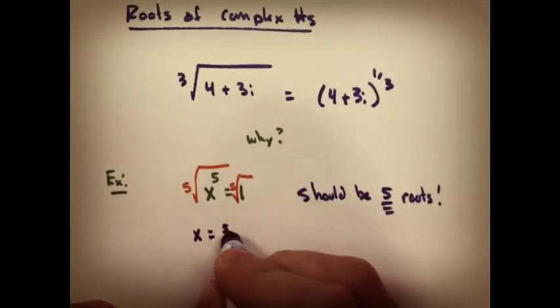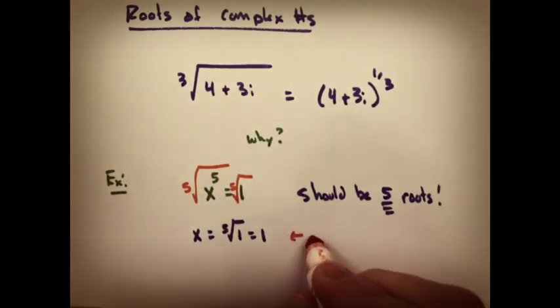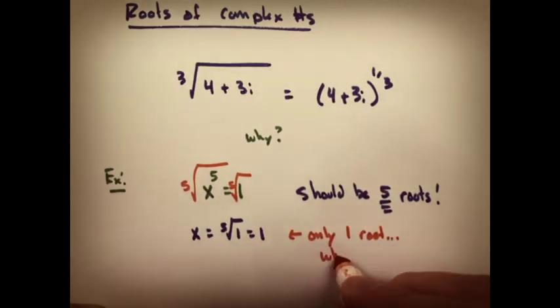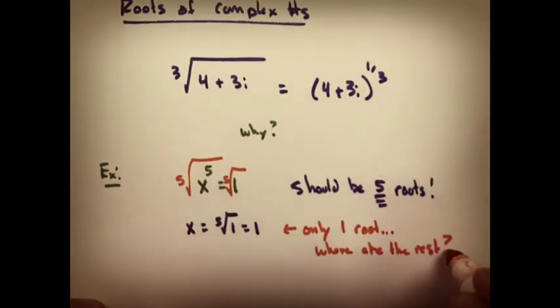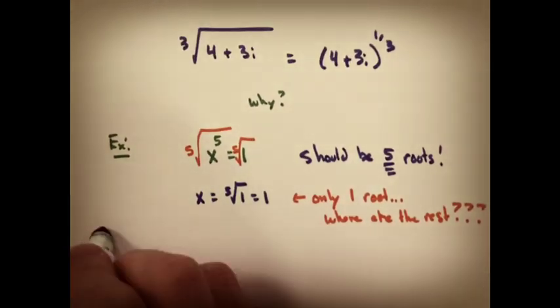If I take the fifth root of each side, piece of cake, I get one answer. But that's only one root. Where the heck are the other four? And the second half of this section really shows us how we can find the other four.